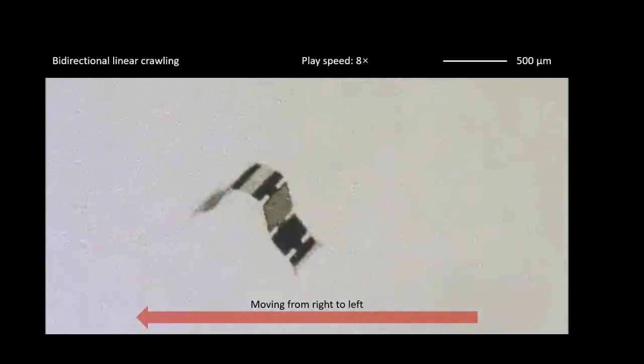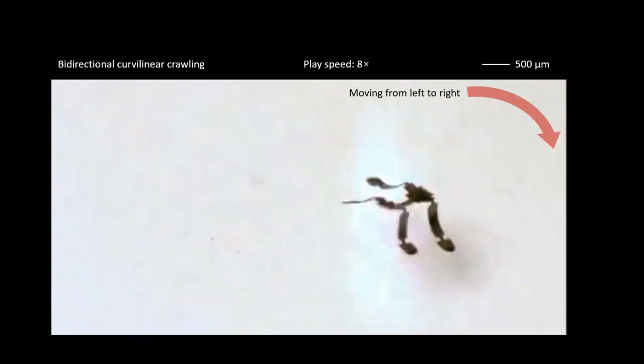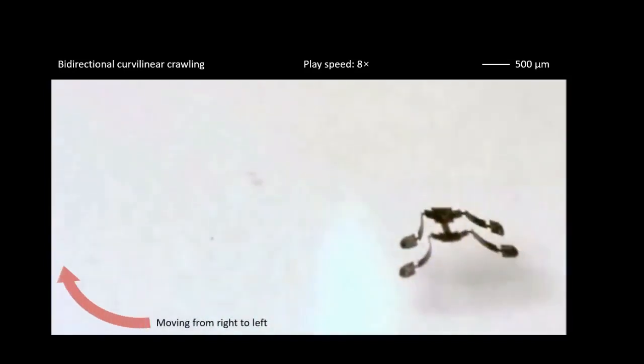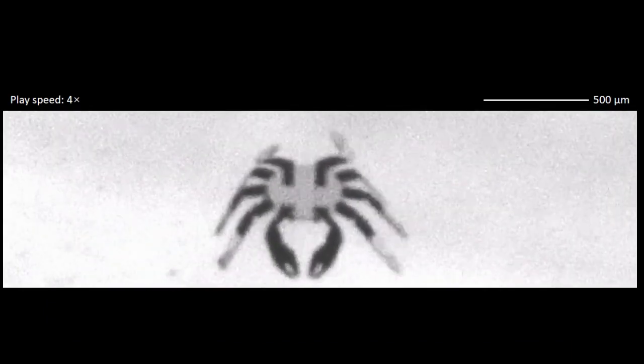Not only does the laser remotely control the robot to activate it, the laser scanning direction also determines the robot's walking direction. Scanning from left to right, for example, causes the robot to move from right to left. Because these structures are so tiny, the rate of cooling is very fast. In fact, reducing the sizes of these robots allows them to run faster.